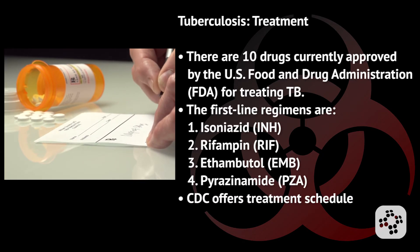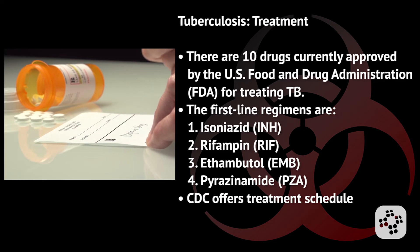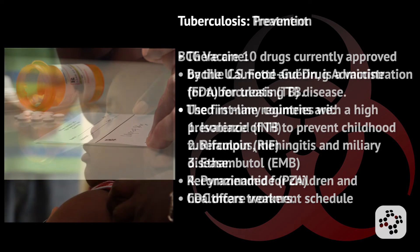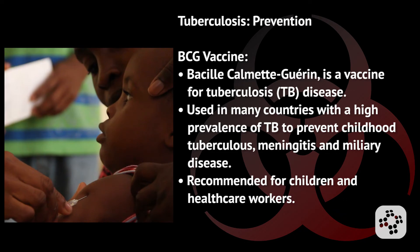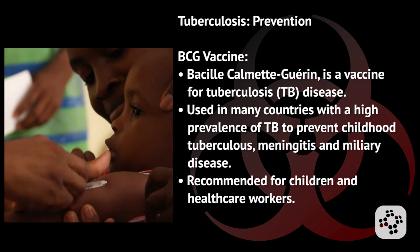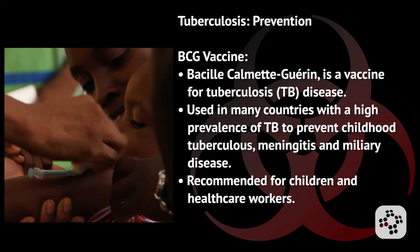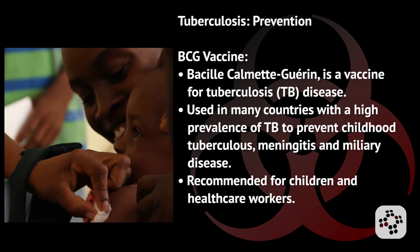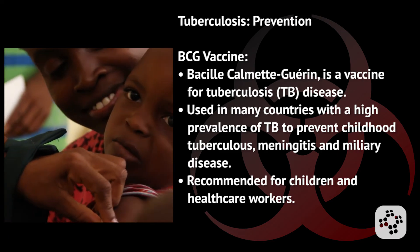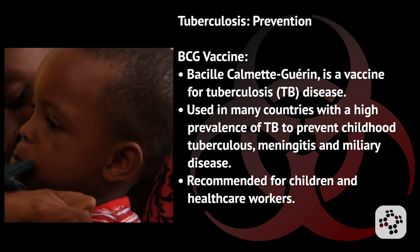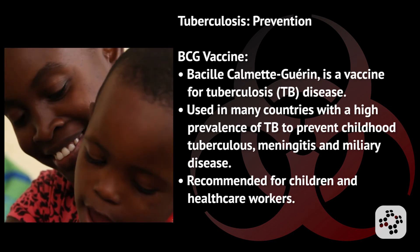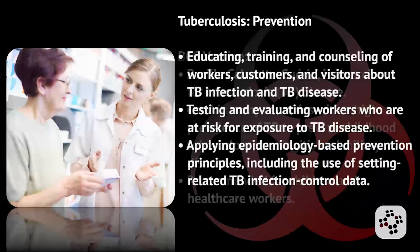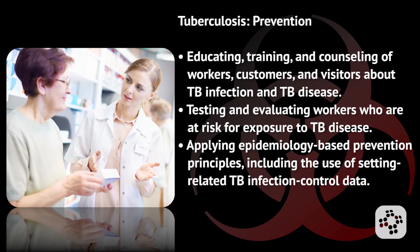For treatment, there are 10 drugs currently approved by the US Food and Drug Administration for treating TB, and the CDC offers a guide for the basic treatment schedule. For prevention, the BCG vaccine is used in many countries with a high prevalence of TB to prevent childhood tuberculosis meningitis and miliary disease. It is recommended for children and healthcare workers.